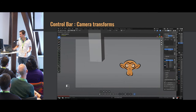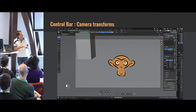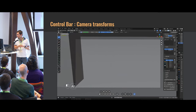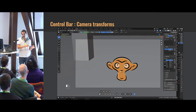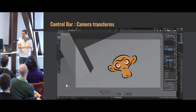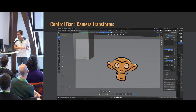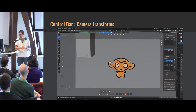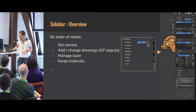Quickly, the camera transform. I created a separate camera transform so you don't have to select your camera — you can stay in your object, continue drawing, and still move and rotate your camera. You can even easily moustache the monkey.